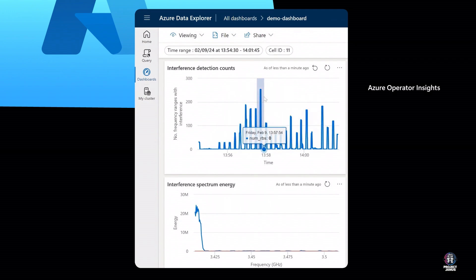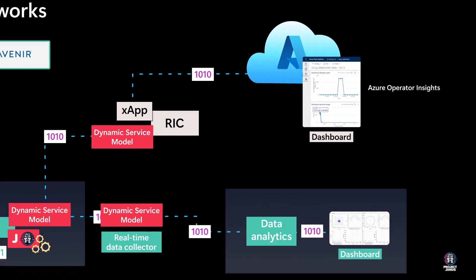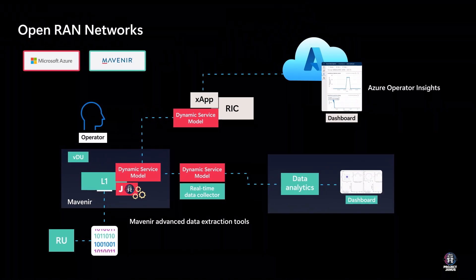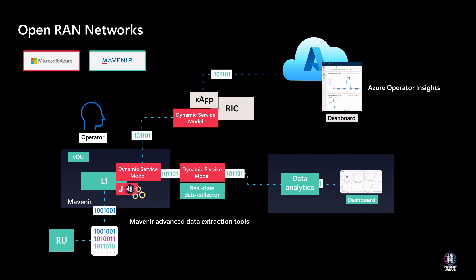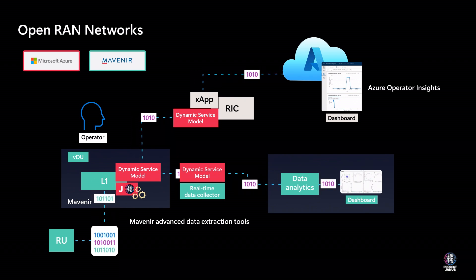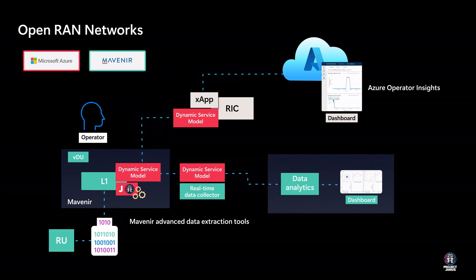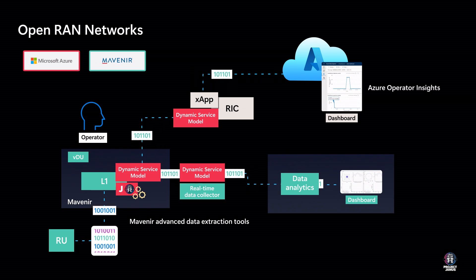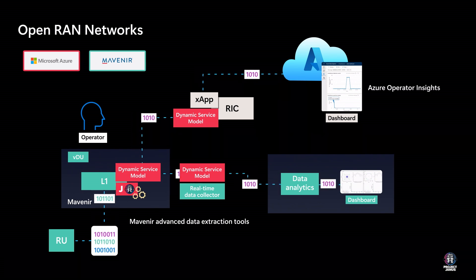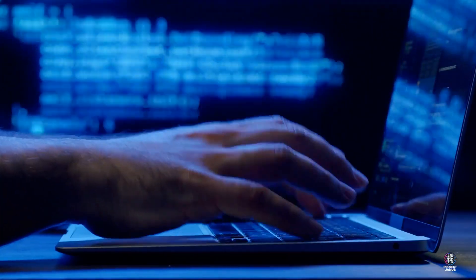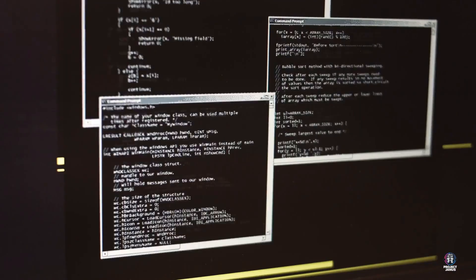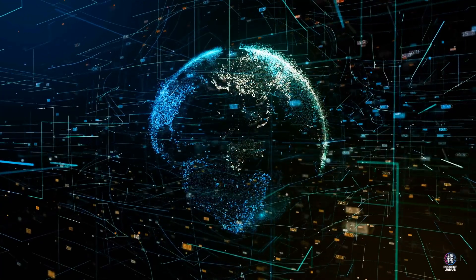The power of Open RAN lies in open interfaces, fostering an ecosystem for new use cases and increased network efficiency. Mavenir and Microsoft showcase the potential of the Mavenir DU product using Microsoft's Janus component from the dynamic service model framework of the programmable RAN platform. This demonstration unlocks value, enabling targeted debugging and facilitating the implementation of new functionalities like interference detection or energy savings by third parties. Mavenir and Microsoft's collaboration showcases the potential of programmable RAN, unlocking advanced functionalities like interference detection and targeted debugging, fostering a future of enhanced network efficiency.